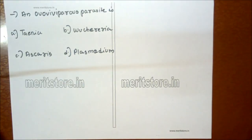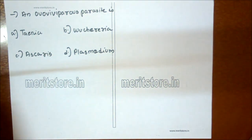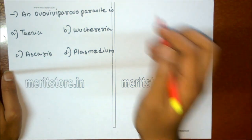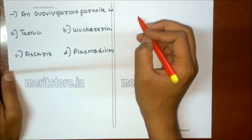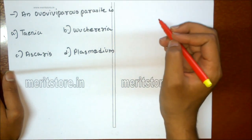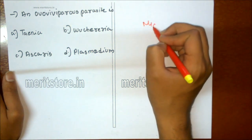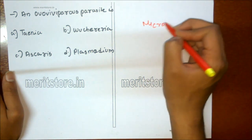An oviparous parasite is: A Taenia, B Wuchereria, C Ascaris, D Plasmodium. Wuchereria is an oviparous parasite which bears eggs, releasing a number of juveniles known as microfilariae. So option B is the correct answer.